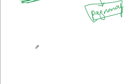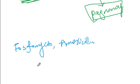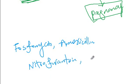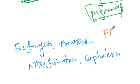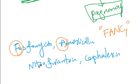For the treatment of urinary tract infection during pregnancy, you have four medication choices: fosfomycin, amoxicillin, nitrofurantoin, and cephalexin. You can use the memory aid FANCY to help remember these drugs — F for fosfomycin, A for amoxicillin, N for nitrofurantoin, and C for cephalexin. So: FANCY. And that concludes our discussion.